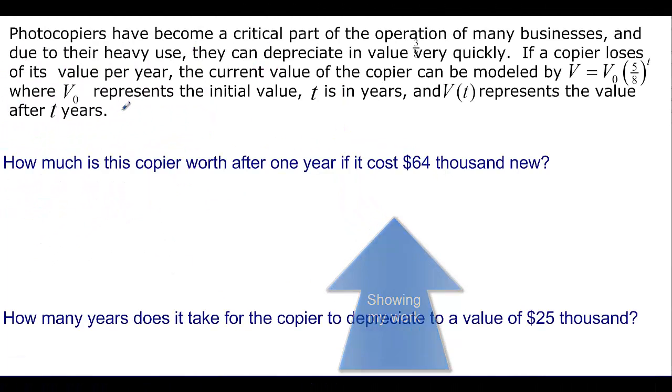All right, so photocopiers have become a critical part of operations of many businesses, and they've got a depreciation equation as V equal V0, 5 eighths to the T. V0 is the initial value. T is in years, and we want to know how much it is after two years. So how much is a copier worth after one year? If it costs 64,000 new, so that would be our V0.